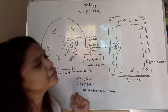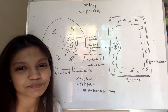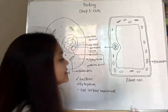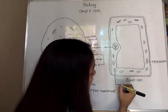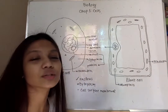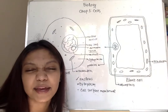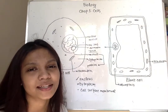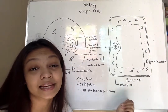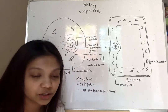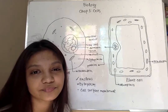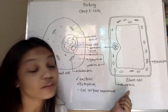Now there are some differences between plant cells and animal cells. Plant cells may also contain organelles called chloroplasts. What do the chloroplasts do? We know that plants make their own food. Chloroplasts are the sites where plants make their food by combining carbon dioxide and water, using energy from sunlight to make sugar. This is the function of chloroplasts.